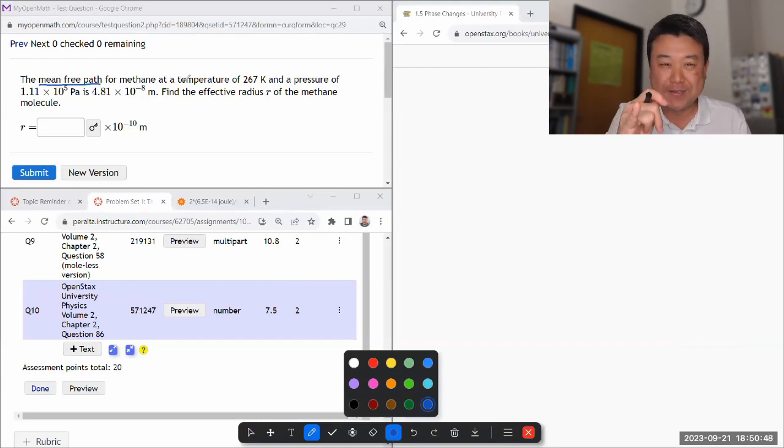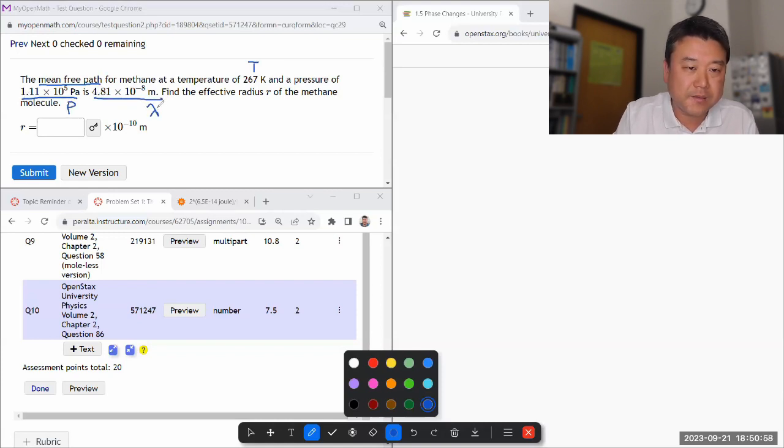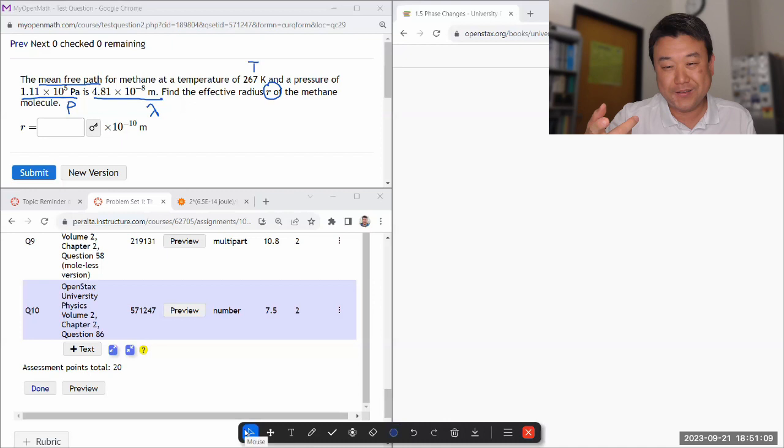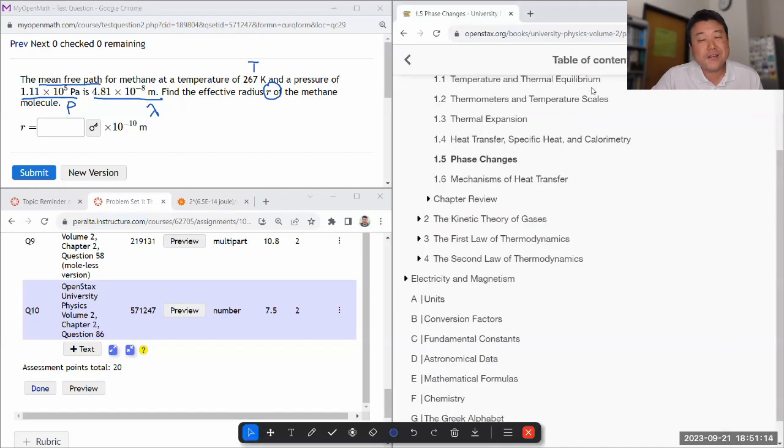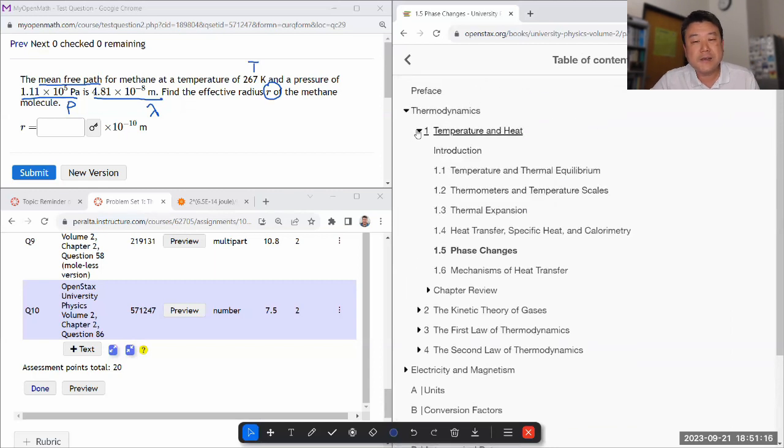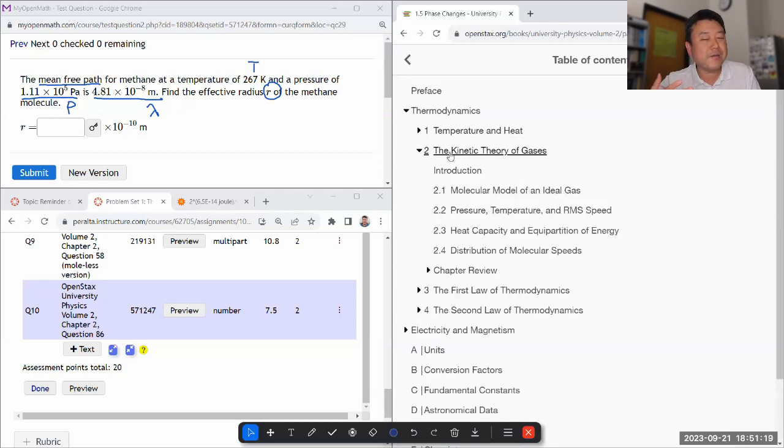It's giving the mean free path lambda at temperature T and pressure P, and asks to find the effective radius R of the methane molecule. I know the textbook talks about mean free path and there's a formula, but this is one of those formulas I've never bothered to memorize because I never really use it except in this one question. All that really matters is that I know where to look it up.